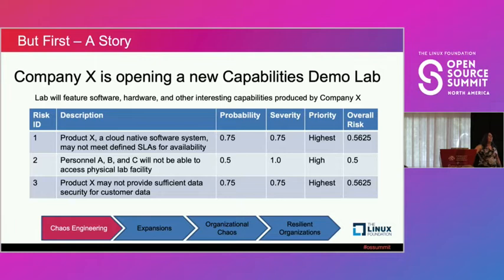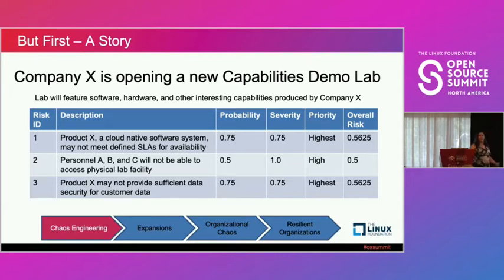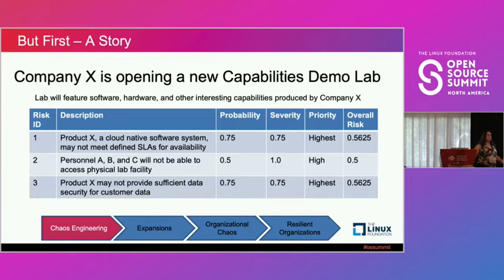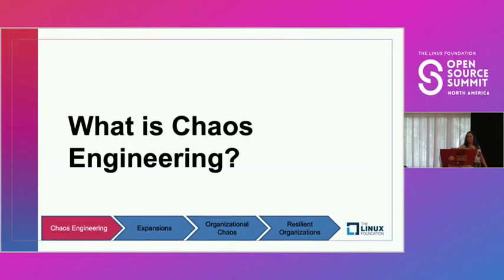The lab manager is very concerned about making sure everything goes as smoothly as possible for this grand opening. Key personnel — essential customers they really want to win business from — are coming in. The lab manager has concerns about Product X because in IR&D efforts, things like security, data protection, and resiliency are often ignored. They assessed the system and came up with the top three risks, which we'll revisit throughout the presentation.